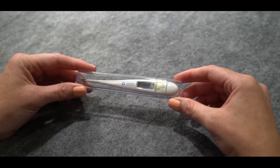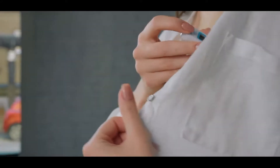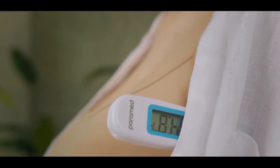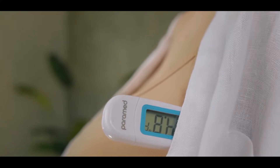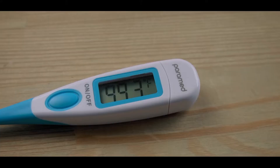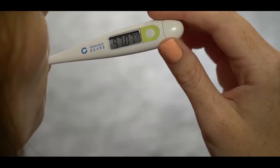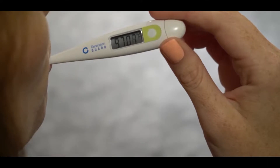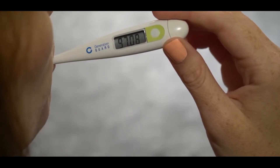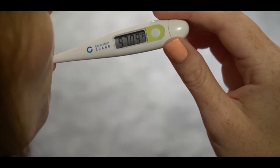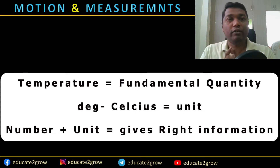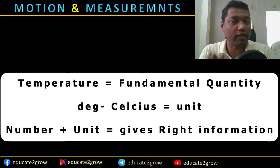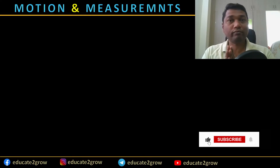Second example: suppose you are not well and you have a fever. When you go to the doctor, the doctor will measure your body temperature. When the number is told and the unit is stated in front of it, only then does that number have complete meaning. If I simply say 102, 99, or 94 — there is no meaning at all. But if you attach a unit alongside any number, it becomes complete information about a fundamental quantity.